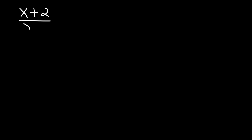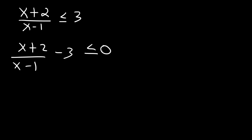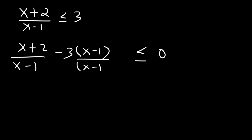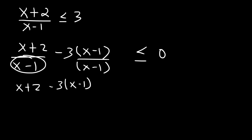Let's work on this next example: x plus 2 over x minus 1 is less than or equal to 3. Since the right side is not 0, we need to do some work before making a number line. Let's move the 3 to the other side: x plus 2 over x minus 1 minus 3 is less than or equal to 0. We then multiply negative 3 by x minus 1 over x minus 1 to get common denominators, giving us x plus 2 minus 3 times x minus 1, all over x minus 1 as a single fraction.